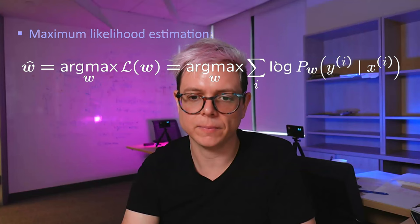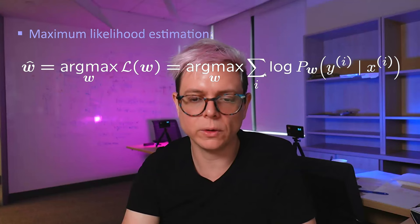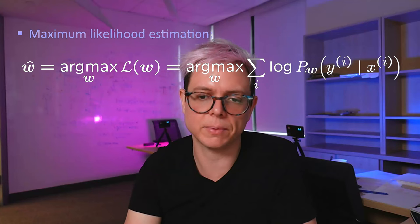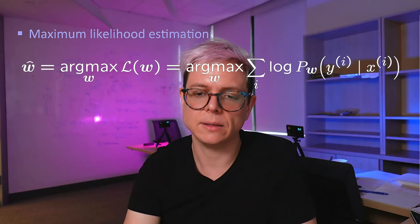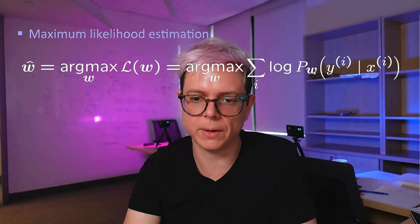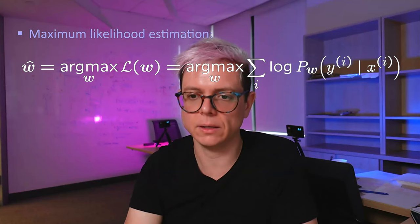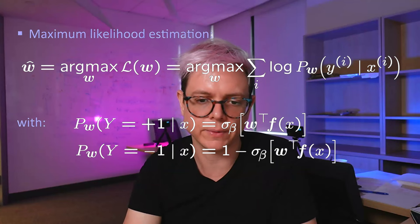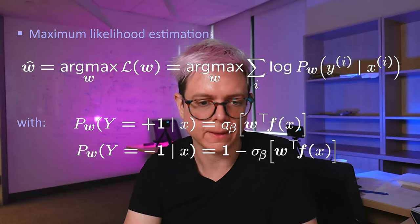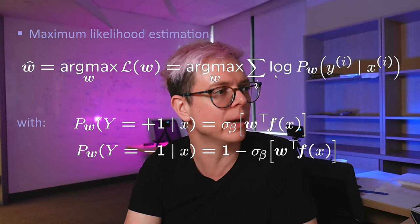We want to find the parameter maximizing the probability that the model assigns to the targets given the inputs. For the binary class, the probability is defined by the sigmoid function. This is the decision boundary that maximizes the probability the model assigns to the labels. In the multi-class case, we have one weight per class; the prediction is the argmax of multiple inner products. We can convert these scores into probabilities using the soft argmax: take the exponential of each score divided by the sum of all exponentials, so that they sum to one.